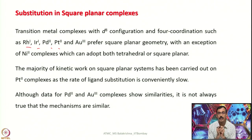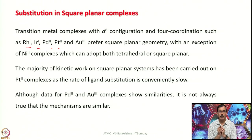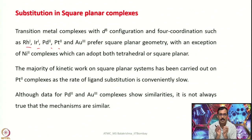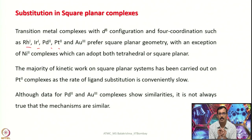The majority of kinetic work on square planar systems has been carried out on platinum(II) complexes because the rate of ligand substitution is conveniently slow, so that the mechanism can be established without resorting to very fancy fast-reaction-rate systems. Although substitution reaction data is available for palladium(II) and gold(III) complexes which show similarities, they do not always follow the same mechanism as rhodium, iridium, or platinum.